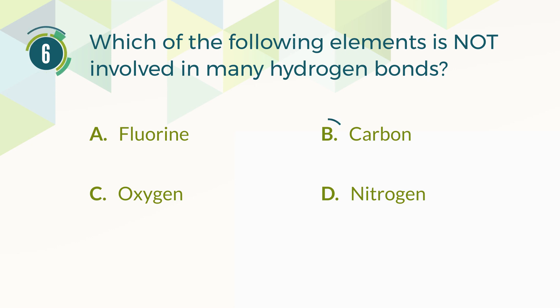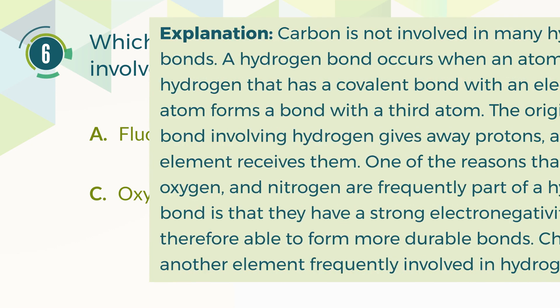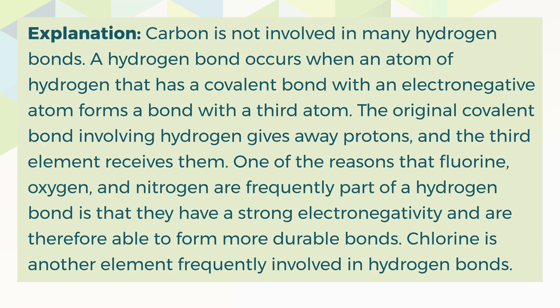The correct answer is B, carbon. Carbon is not involved in many hydrogen bonds. A hydrogen bond occurs when an atom of hydrogen that has a covalent bond with an electronegative atom forms a bond with a third atom. The original covalent bond involving hydrogen gives away protons, and the third element receives them. Fluorine, oxygen, and nitrogen are frequently part of hydrogen bonds because they have a strong electronegativity and are therefore able to form more durable bonds. Chlorine is another element frequently involved in hydrogen bonds.